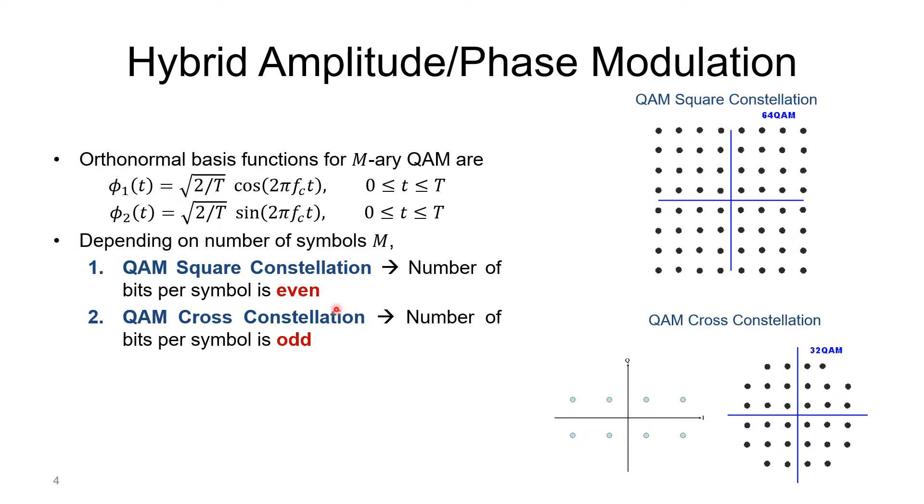It's important because when we look at the probability of error, we have to address the difference between the constellation diagrams.